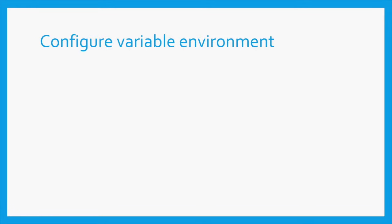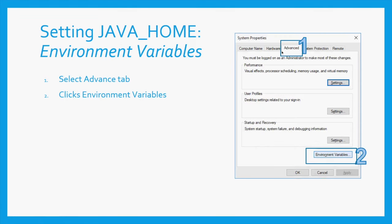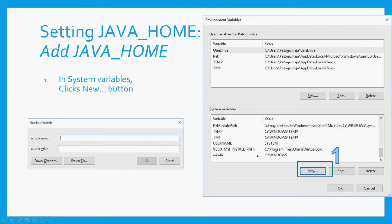The next point is configuring your variable environment. What you need to do is click on the search button and then type 'advanced system settings'. You will see the control panel button that you can click on, which takes you to the control panel. When the system properties window appears, you might not be in the advanced tab — click on the advanced tab, then click on environment variables, and that takes you to this screen.